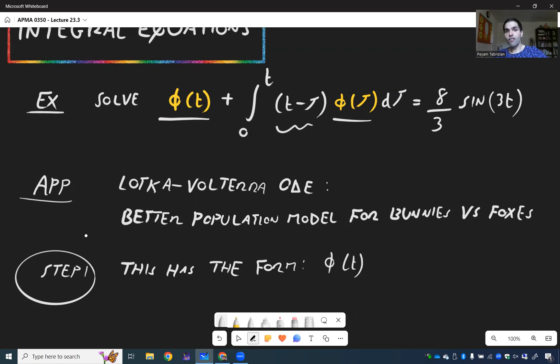See, this is like f(t-τ) and this is g(τ). So it's really φ(t) plus t convolved with φ(t).